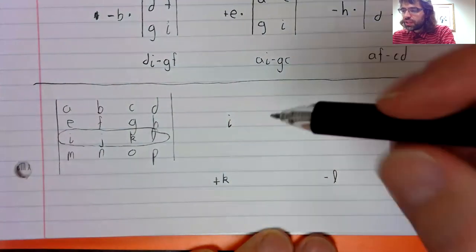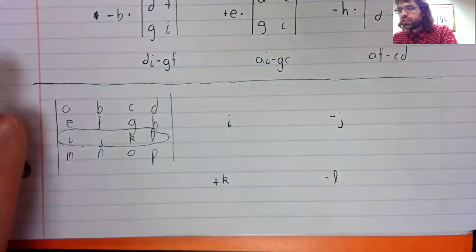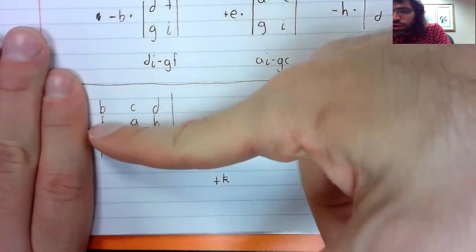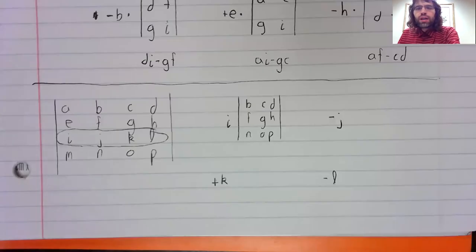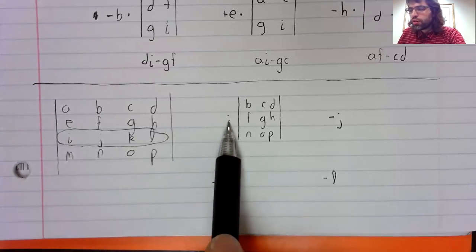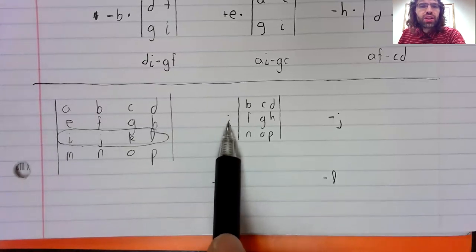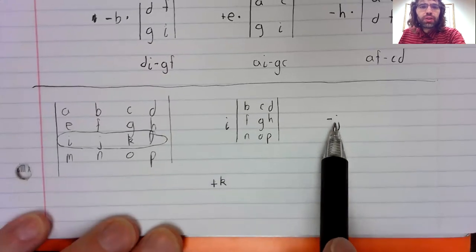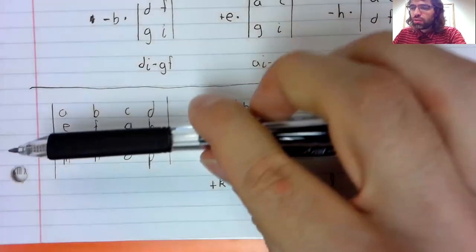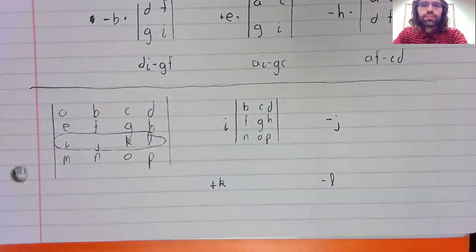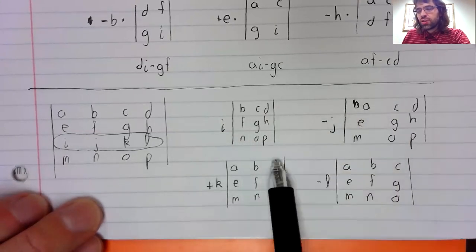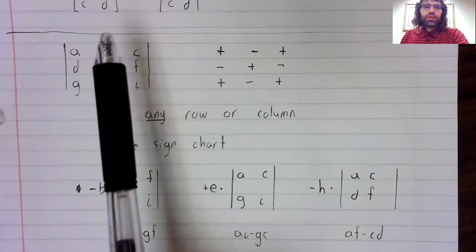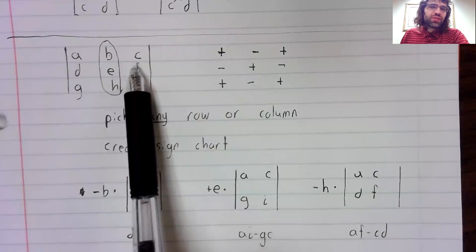Each of these is being multiplied by the determinant you get if you cover up a column and you cover up a row. Again, the row and column we're covering up are the row and column that have this number in it. So similarly over here, we cover up the second column and the third row. And now you have four three by three determinants. Each of these determinants you find using this definition.